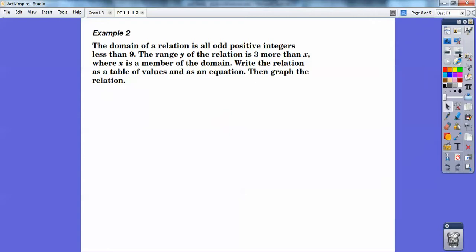So the domain of a relation is all odd positive integers less than 9, like 1, 3, 5, and 7. Those are odd less than 9. The range y of the relation is 3 more than x. So add 3 to all those numbers where x is the member of the domain. Write the relation as a table of values and as an equation, and then graph.